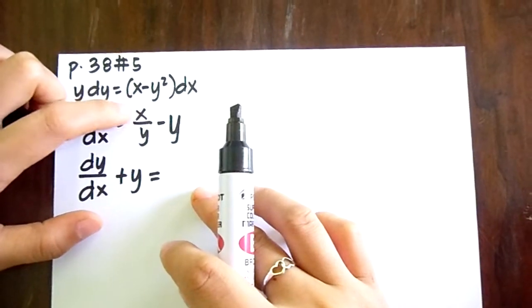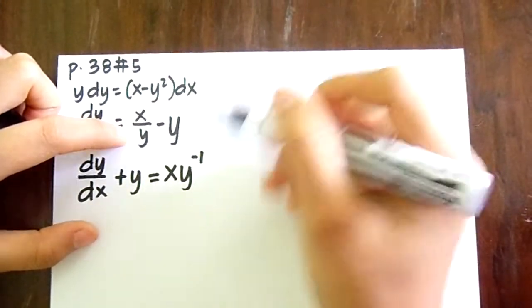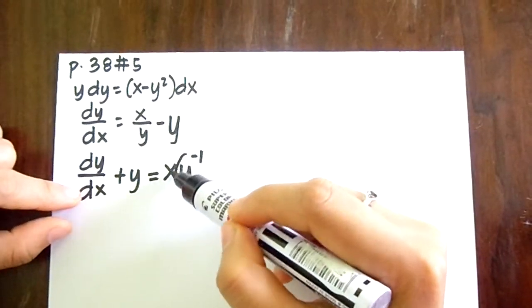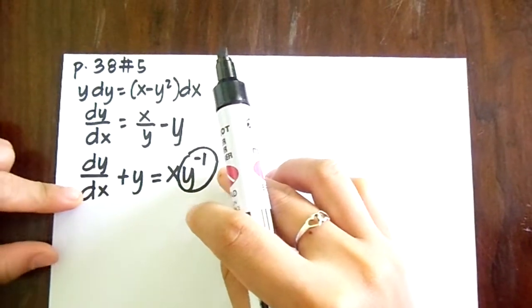Now we transpose this to its general equation, it becomes dy over dx plus y is equal to, remember that this x over y is just equal to x y to the negative 1.